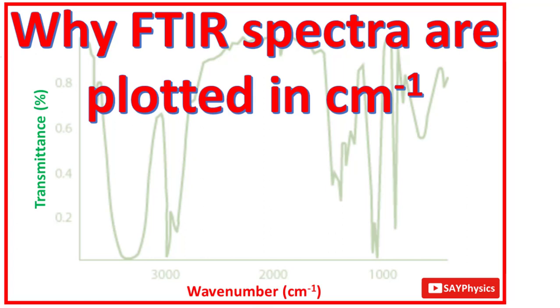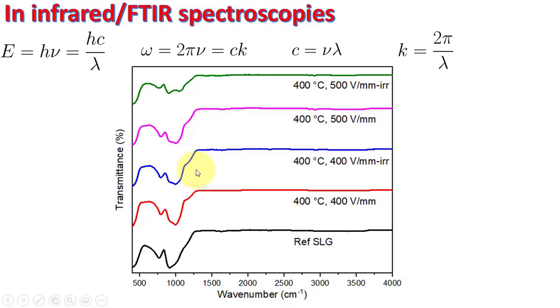In FTIR, we actually plot wavenumber. Then why in IR spectra we need the wavenumber? This is a very important question.